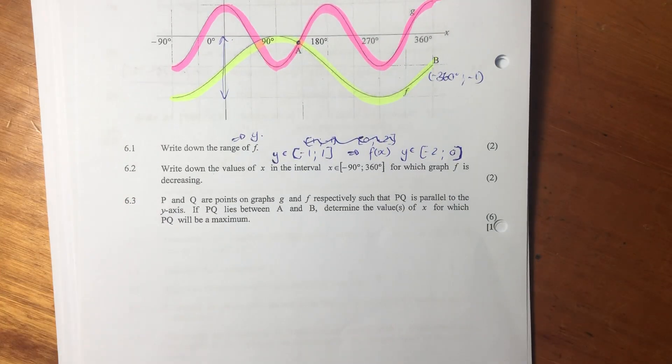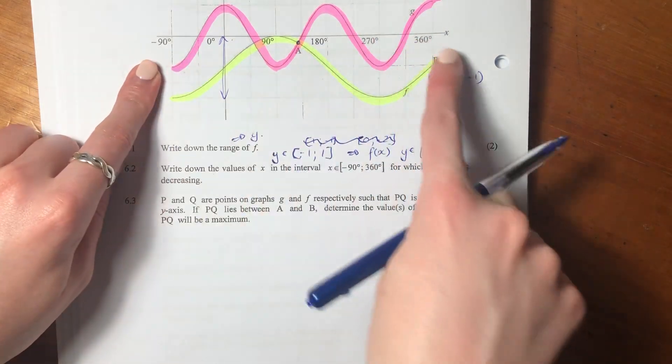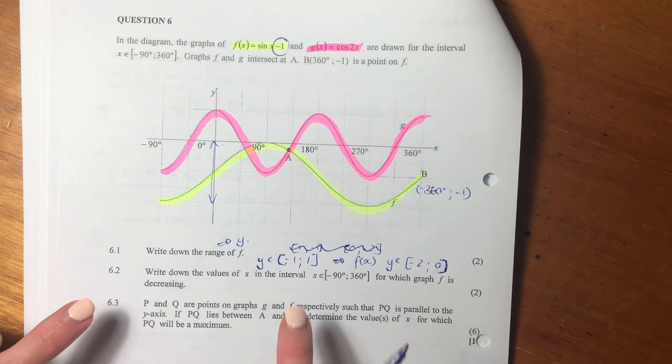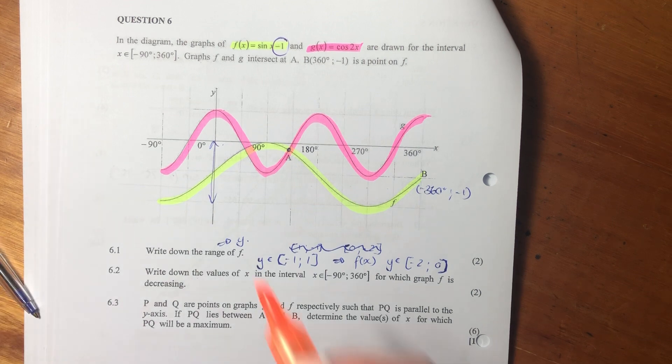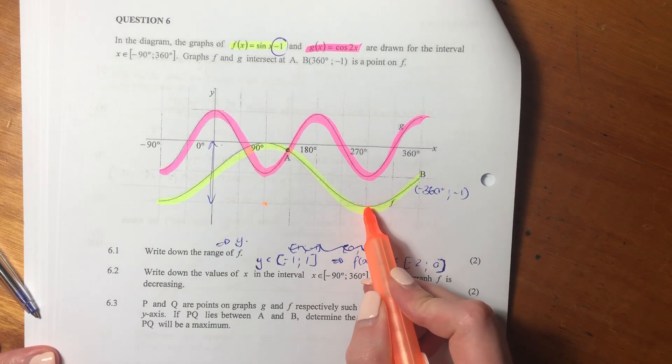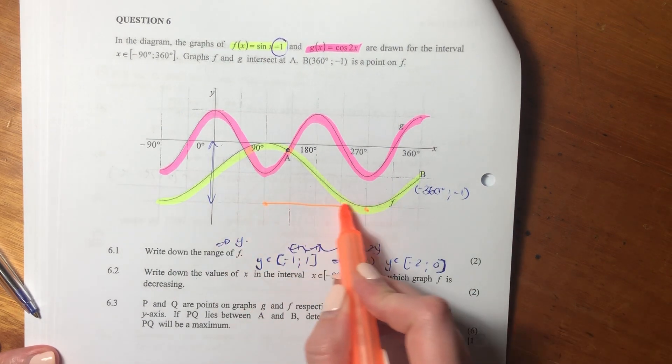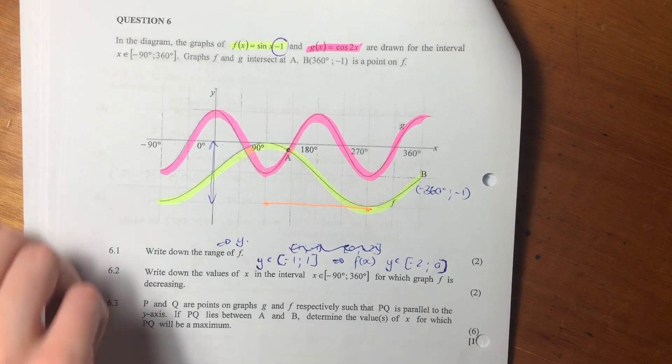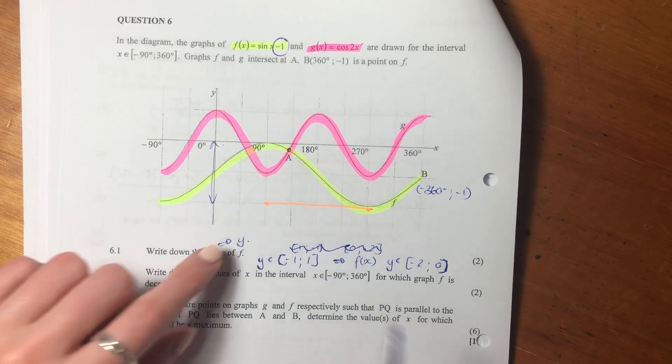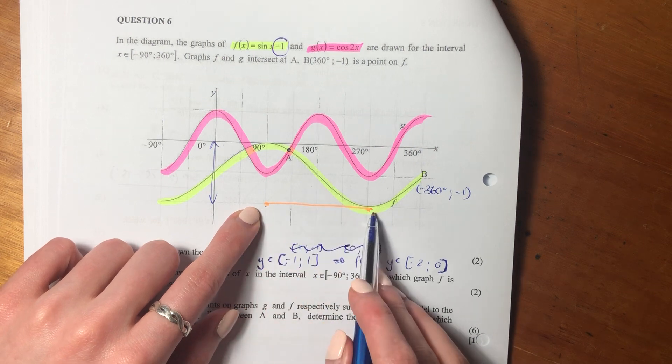Let's now move on to 6.2. It says, write down the values of x in the interval negative 90 to 360, so the interval that we have here, for which graph f is decreasing. So we can see here that it increases, increases, increases, and then from 90 to 270, it decreases. Now, at 90, it's neither increasing or decreasing. It's a turning point. And at 270, it's neither increasing nor decreasing. It's a turning point.